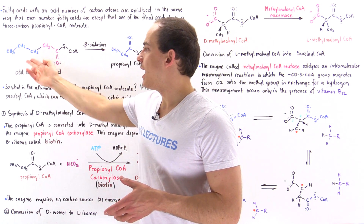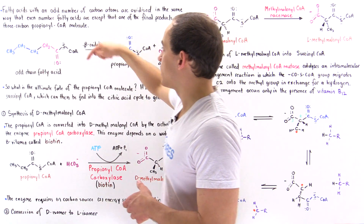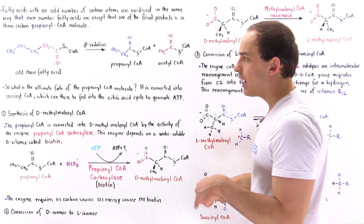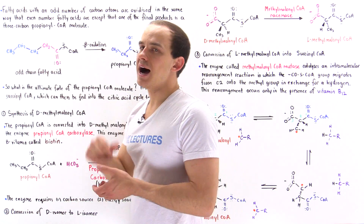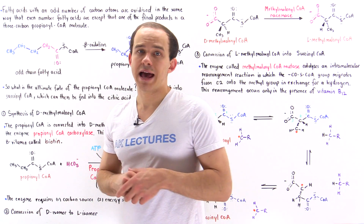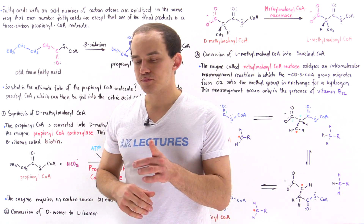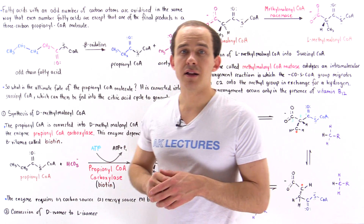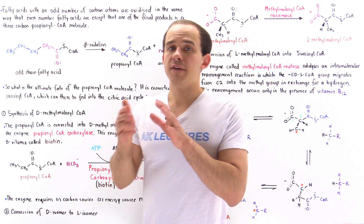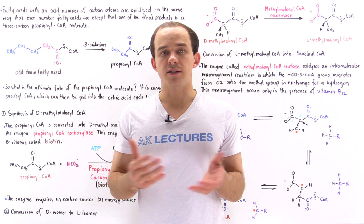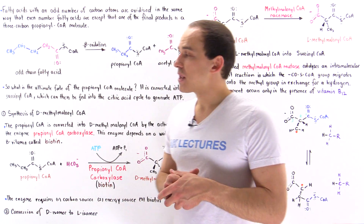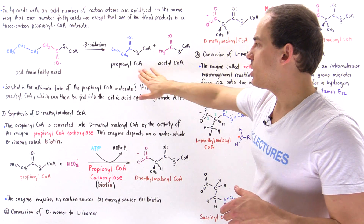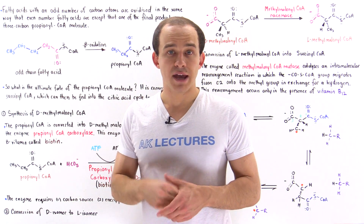Suppose we have an odd chain fatty acid that contains 5 carbon atoms — carbon atoms 1, 2, 3, 4, and 5. Once we activate this molecule and transport it into the matrix of the mitochondria, it undergoes beta-oxidation in the same way that an even chain fatty acid does. In even chain fatty acid breakdown, we generate acetyl coenzyme A molecules only. But in odd chain fatty acid breakdown, not only do we generate acetyl coenzyme A, we also generate a propionyl coenzyme A, a 3-carbon molecule.